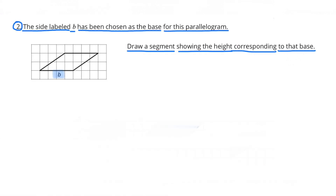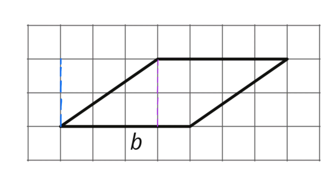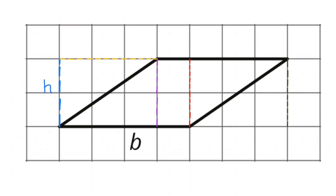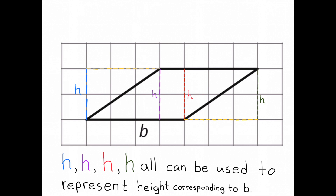Number 2: The side labeled B has been chosen as the base for this parallelogram. Draw a segment showing the height corresponding to that base. We have a lot of choices as to where we can draw a segment that shows the height corresponding to that base. Here are a few segments that would represent height corresponding to B.